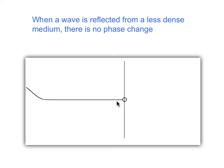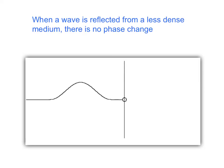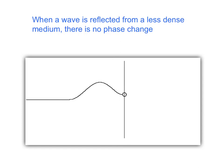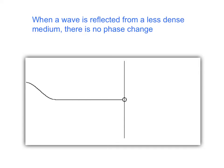Let's see what happens when there is a reflection from an end of the string that is not fixed but is free to move up and down when the wave gets there. Notice now when a crest comes in, on reflection a crest comes out — so there is no phase change. If a trough was coming in, then a trough would be coming out. So when a wave is reflected from a less dense medium, there is no phase change.